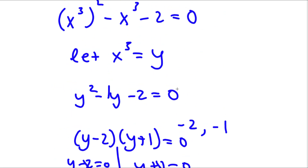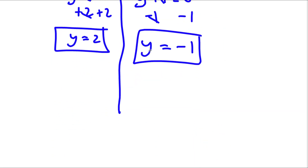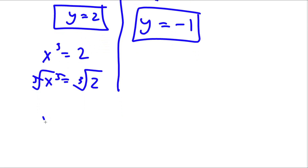So now remember how we let x to the power of 3 equal y. So if x to the power of 3 equals y and y equals 2, then I have x to the power of 3 is equal to 2. And to solve this, I'm going to take the cube root on both sides, and I'll be left with x is equal to the cube root of 2.